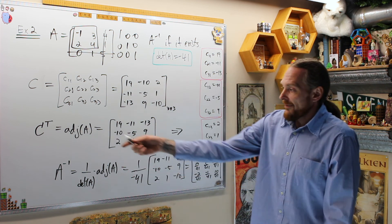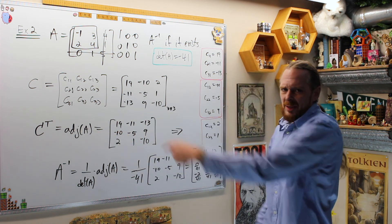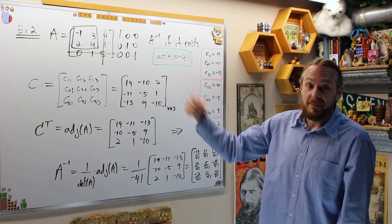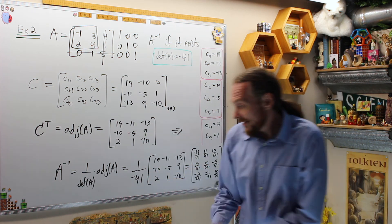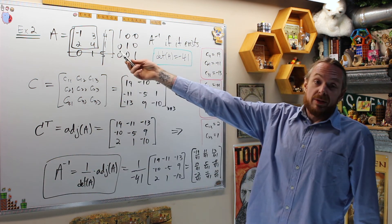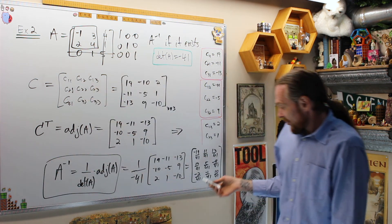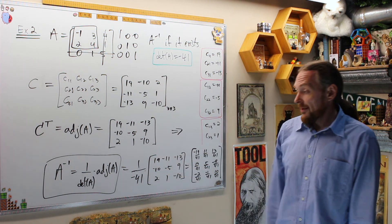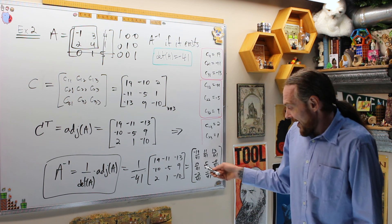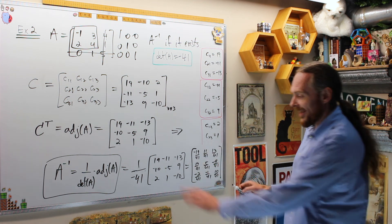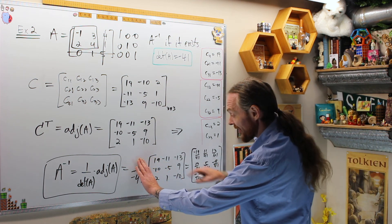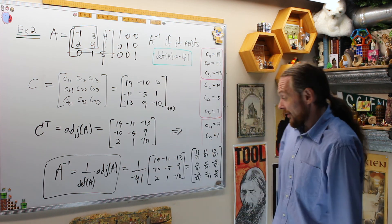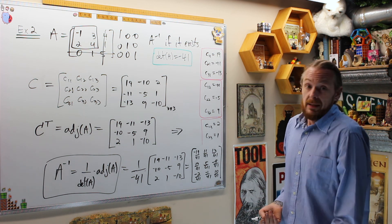At first, yes, you have to learn what adjoint is, the cofactor transpose, cofactor expansion, and all the terminology. But the extreme advantage is that with this algebraic formula, if you're given a matrix with no fractions, the fractions only come at the end when you scalar multiply by 1 over the determinant. You can verify: multiply this matrix by A, then scalar multiply by -41, and you'll see that you get the identity matrix.